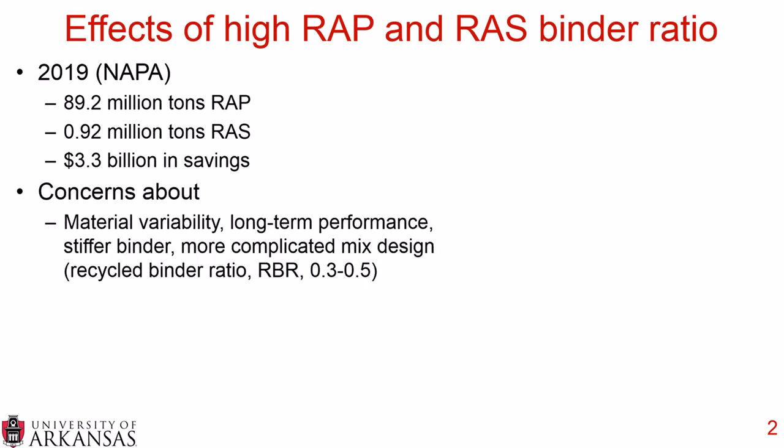However, there are concerns about using high RAP and RAS in mixtures. That includes material variability of the RAP and RAS, the long-term performance of these mixtures, the fact that you're putting a much stiffer binder into your asphalt mixture, and a more complicated mix design. All of these concerns are amplified when we have higher recycled binder ratios, or RBRs, and when we say higher we mean in the 0.3 to 0.5 range.